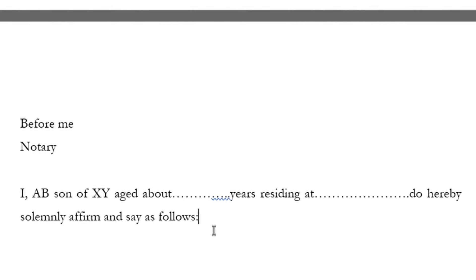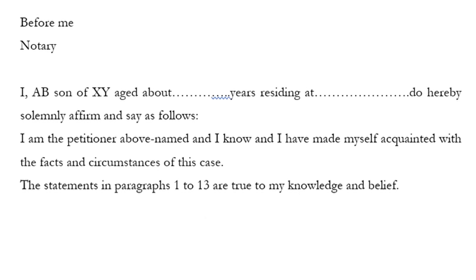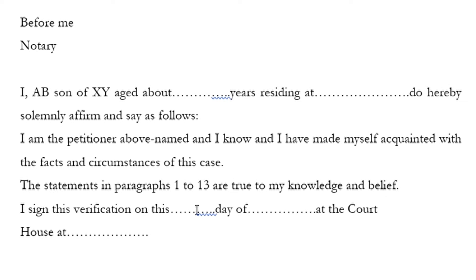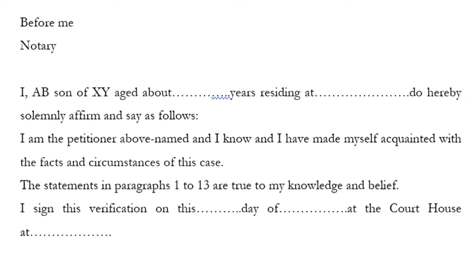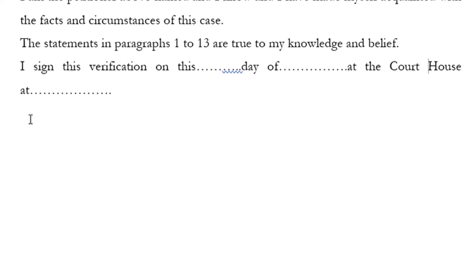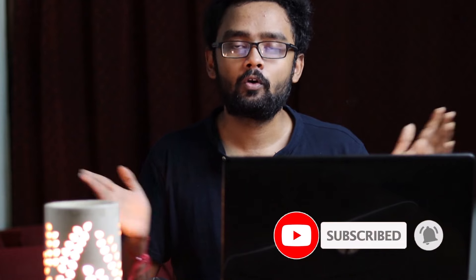Verification. In another paragraph we will put the husband's verification. I, Fuldev, son of Kanchadev, aged about [X] years, residing at [address], do hereby solemnly affirm and state as follows. I am the petitioner above named and I know and have made myself acquainted with the facts and circumstances of this case. The statements in paragraphs 1 to 10 are true to my knowledge and belief. I sign this verification on this day of [date] at the courthouse at [place]. Signature of husband and signature of advocate.